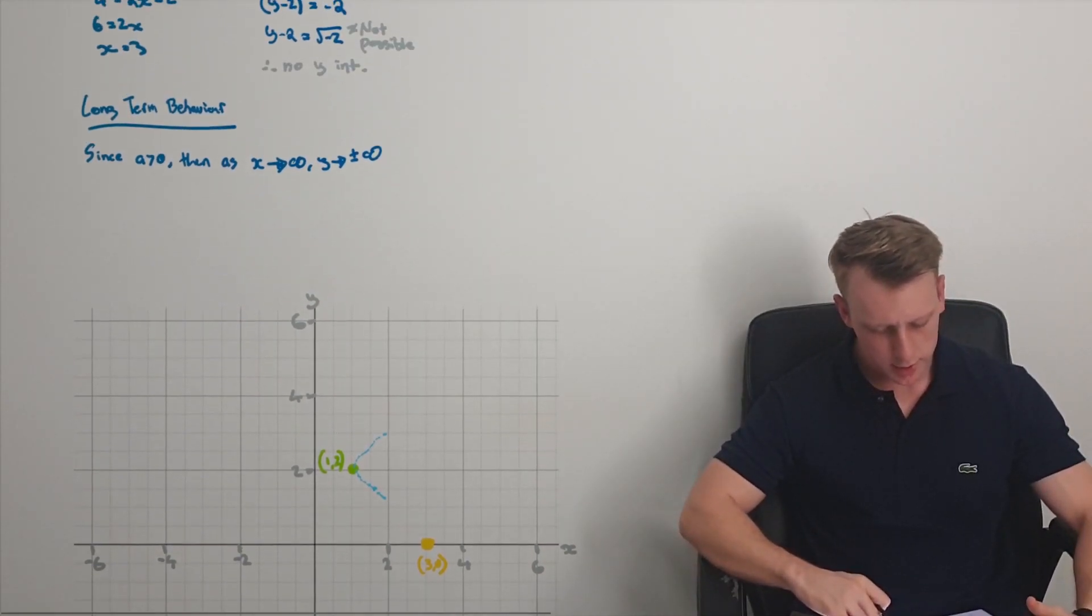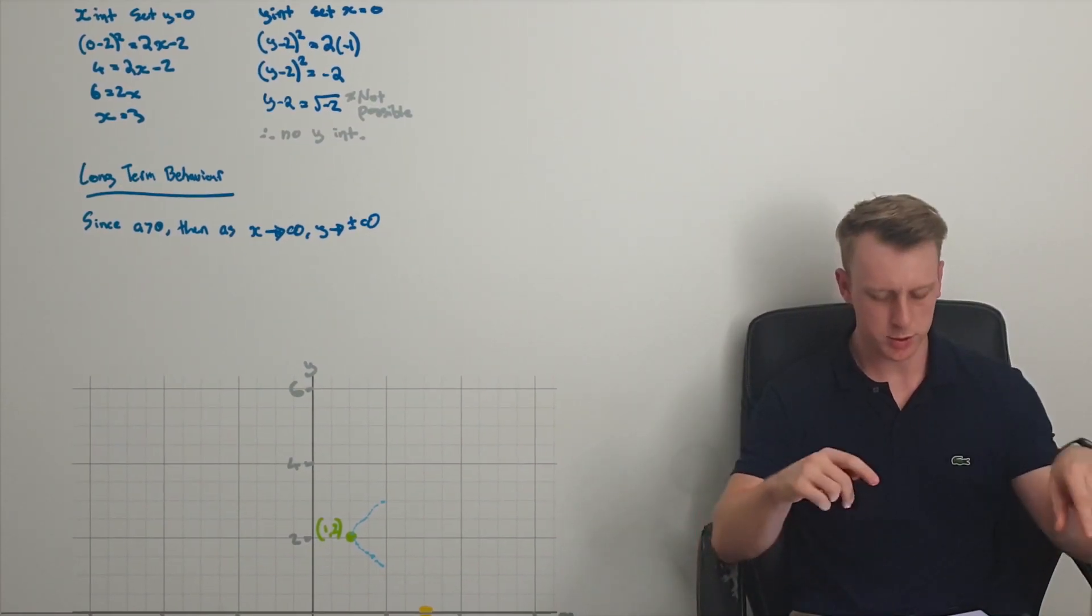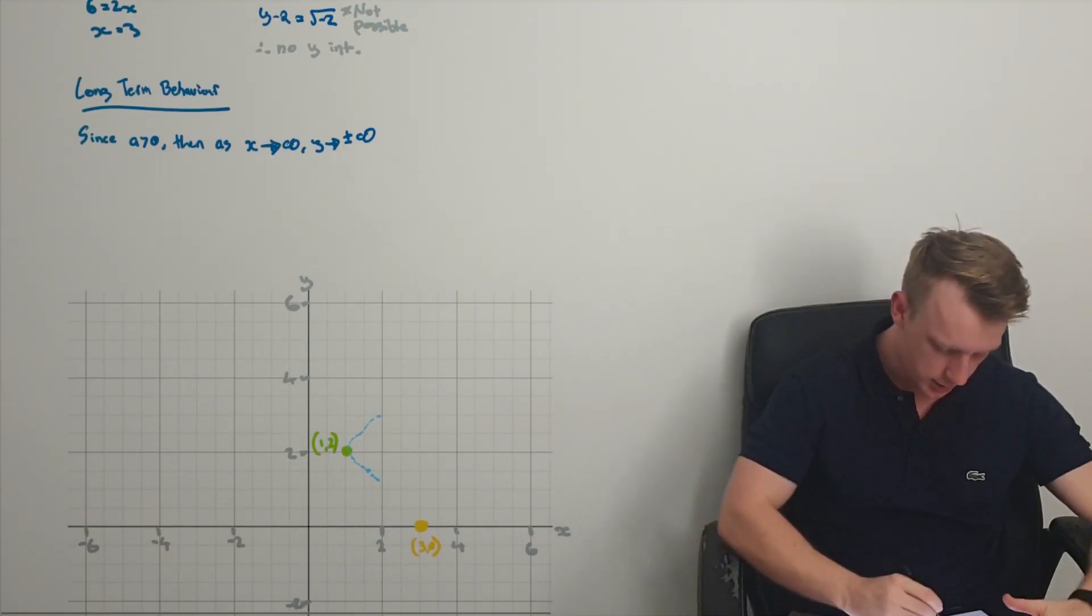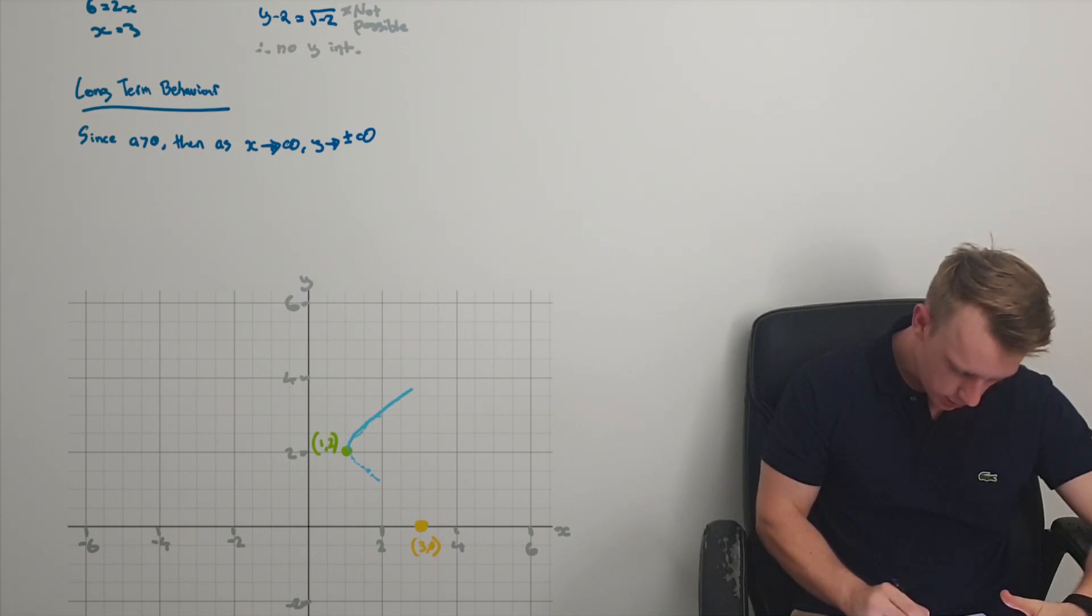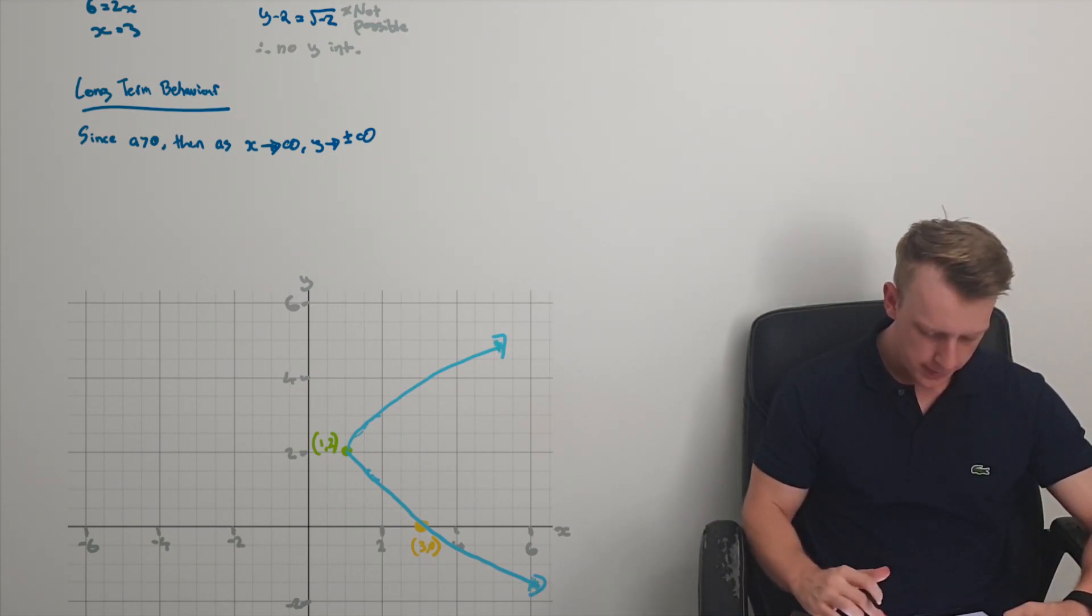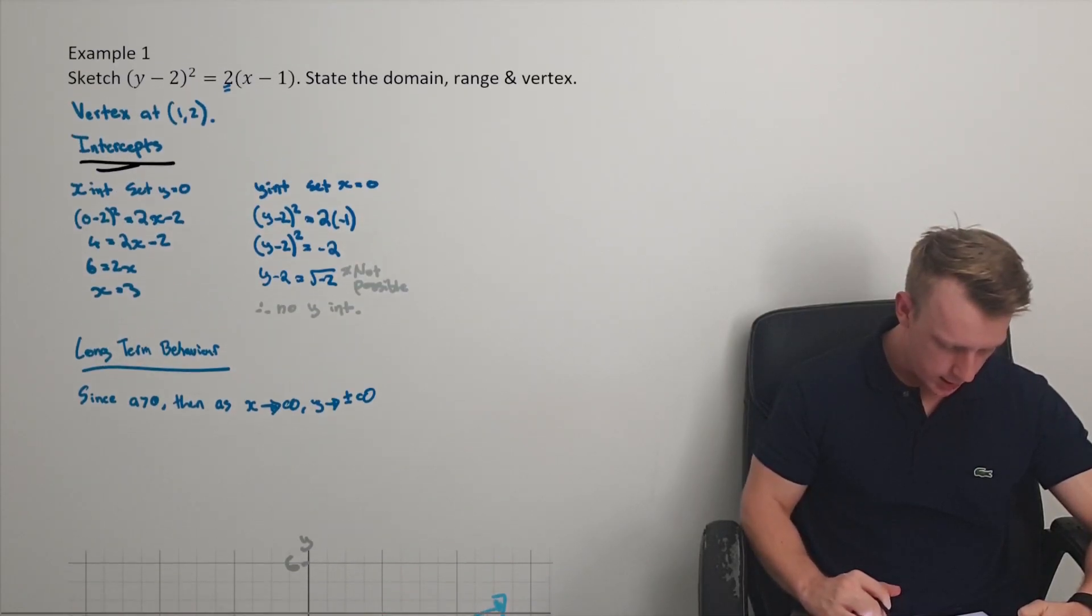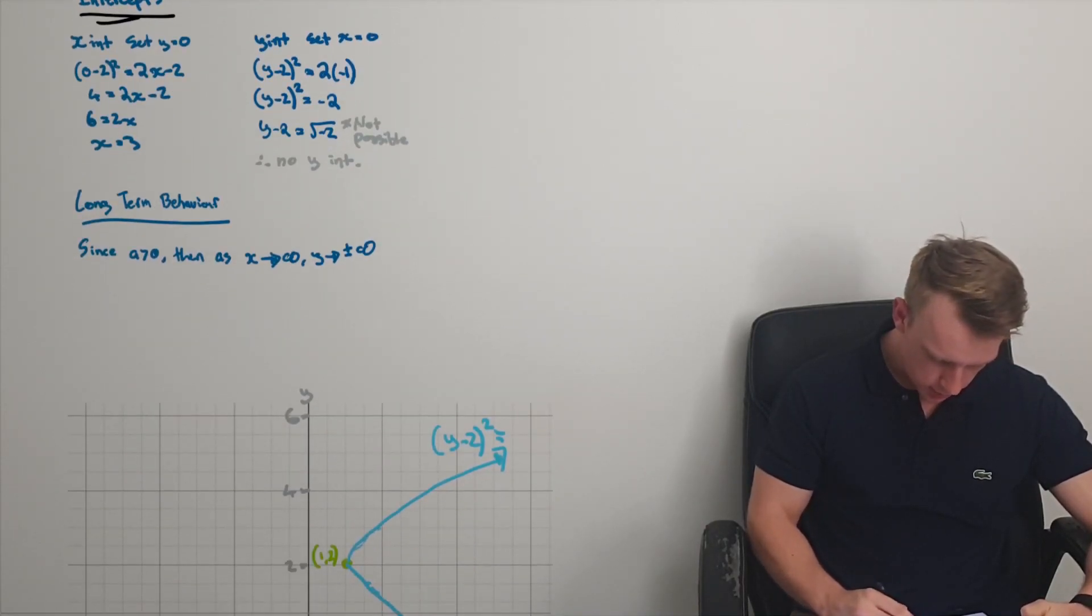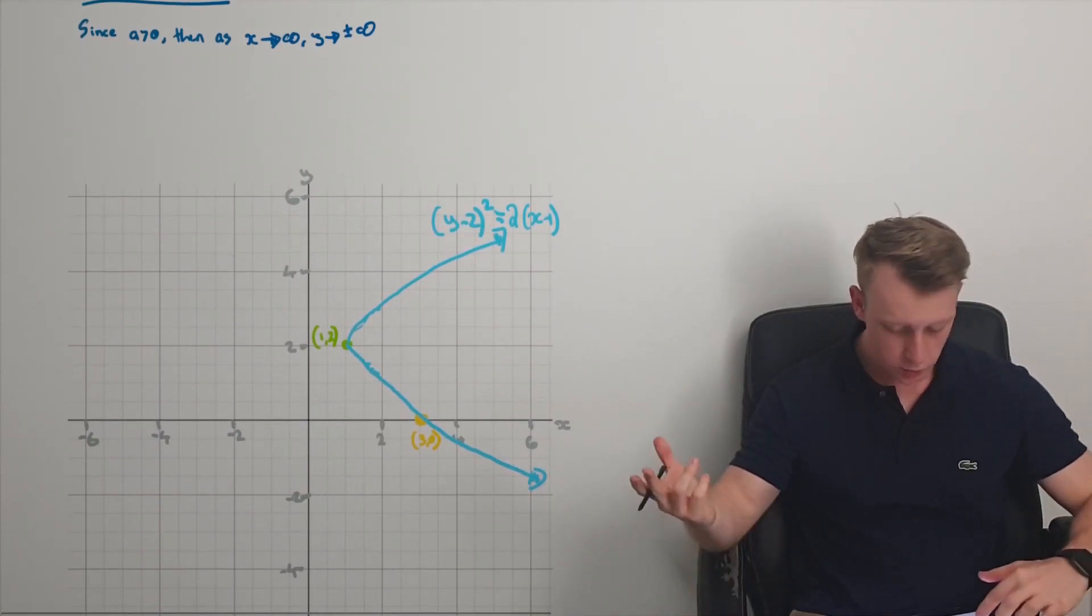Then we kind of think, oh, that's why we didn't get any y-intercepts, because where the vertex was, the long-term behavior shoots away from that y-axis. So it kind of goes along up like this, down through this point, and down along there. So it goes along here, and there. And our relation is y minus 2 squared is equal to 2 times x minus 1.